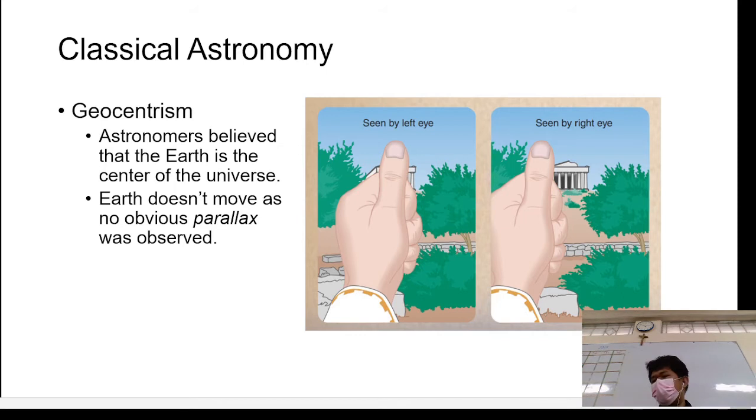So, geocentrism, or that geocentric model of the universe. Astronomers believe that the Earth is the center of the universe, as what we have said. We also explained the philosophy behind it. And, of course, there are somehow physical evidence by the astronomers that the Earth is really the center of the universe. And what? There are no other explanations because we don't observe parallax.